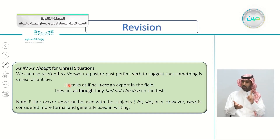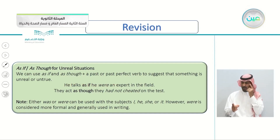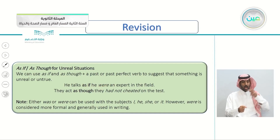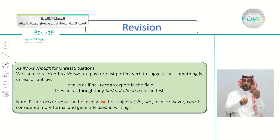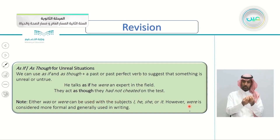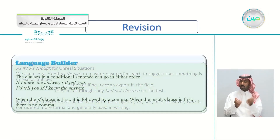For example: he talks as if he were an expert. Is he an expert? No, of course. And remember, we said 'were' here — because either was or were can be used with the subjects I, he, she, or it. However, 'were' is more formal and generally used, especially in writing.